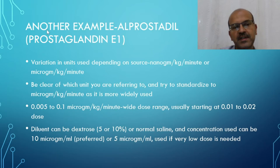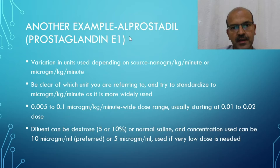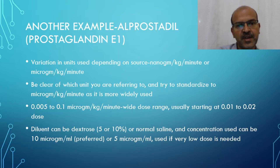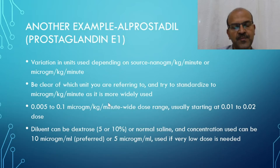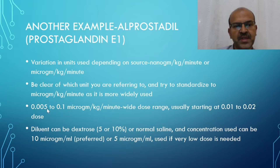Just to close this, we will discuss a very important infusion used in management of congenital heart disease, which is alprostadil (Prostaglandin E1). The way we name it can be nanogram per kilogram per minute or microgram per kilogram per minute, but we should try to stick within the unit to standardize and use one. In our unit, we use microgram per kilogram per minute, even though it comes in decimals and small numbers, because the cardiologist prefers it that way.